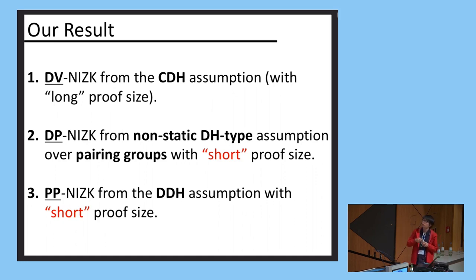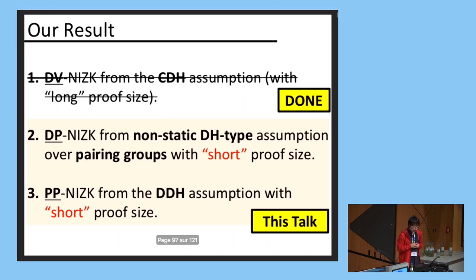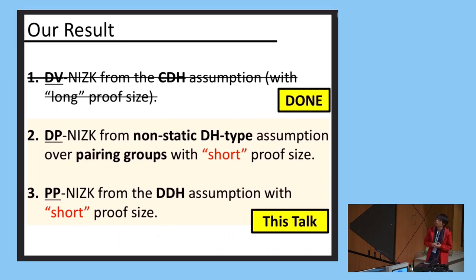For the last one, the third result, the preprocessing NIZK, we get this from the DDH assumption. The first one is already done, so what we're going to be looking at is item two and item three.